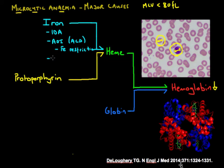A rarer cause under the iron category is copper deficiency, which can lead to problems with iron absorption and iron redistribution. This is worth remembering especially in patients who have had gut surgery — often bariatric surgery for obesity — where copper absorption may be impaired.